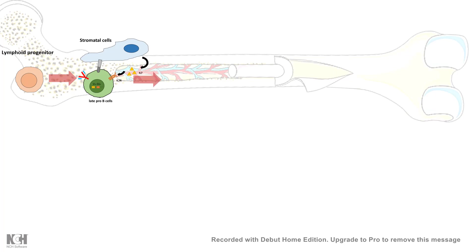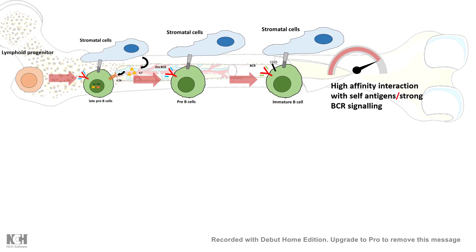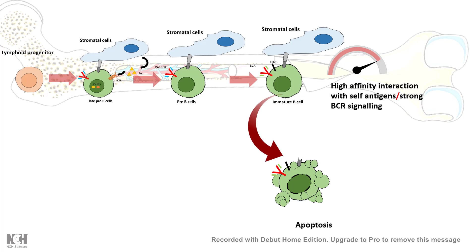During B-cell development, a lymphoid progenitor cell in subsequent steps gives rise to an immature B cell. In this immature B cell, you have the B-cell receptor which can recognize antigens. But if they recognize self-antigens with very high affinity or show very strong B-cell signaling, the body has to take preventive measures, because these immature B cells could become rogue in the future and harm the body. So they can be killed by an apoptotic mechanism — programmed cell death.